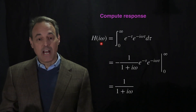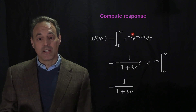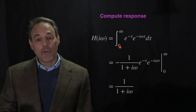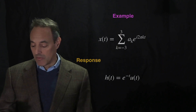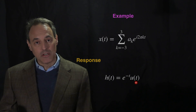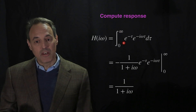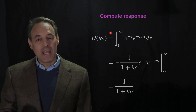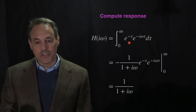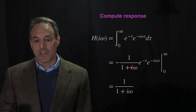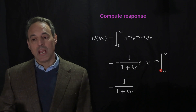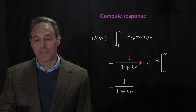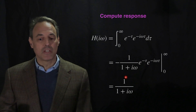I already know the Fourier representation of the signal. To compute the output, all I need to know is how this system responds — and I want to project that into Fourier space. Here's H(iω): I project into Fourier space by taking my signal response E^(-t), integrating from 0 to infinity because this signal only comes on at time zero (it's causal), and integrating E^(-τ) against E^(-iωτ) dτ. This is for any frequency. You can easily do this integral — it's just exponentials. Evaluating at infinity gives zero because E^(-∞) → 0, and at zero, E^0 = 1.